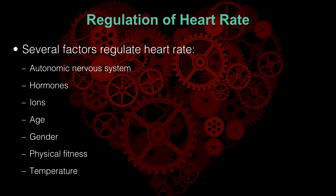You saw autonomic regulation when you did the diving reflex in lab two: when you immersed the subject's face in cold water, heart rate dropped — parasympathetic depression of heart rate. The main regulators are the autonomic nervous system and hormones, including epinephrine, adrenaline, and norepinephrine, which are also a big part of the autonomic nervous system.